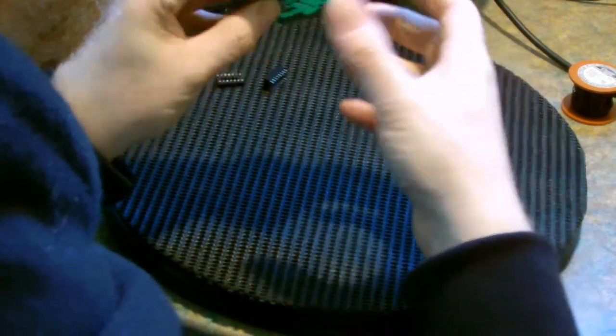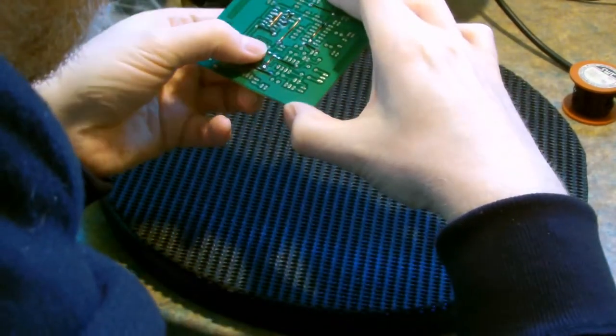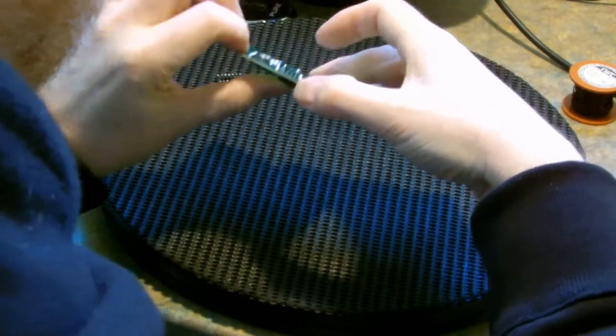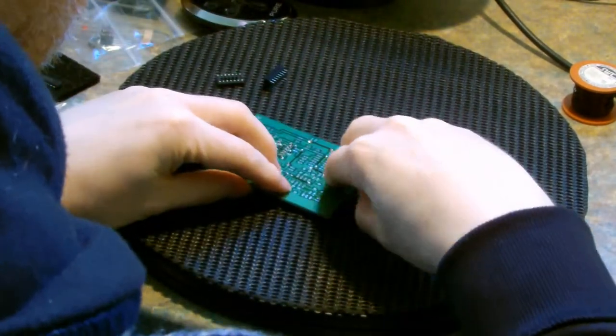Here I'm installing one of the IC sockets. I like to solder the corner pins first so that the IC socket is held securely in place on the board, before completing the other pins.